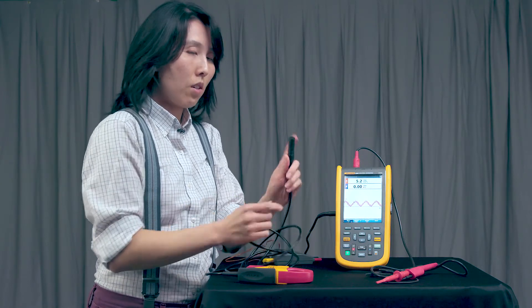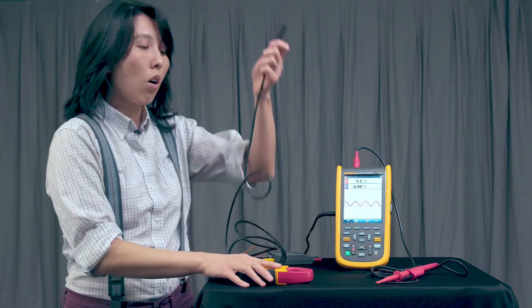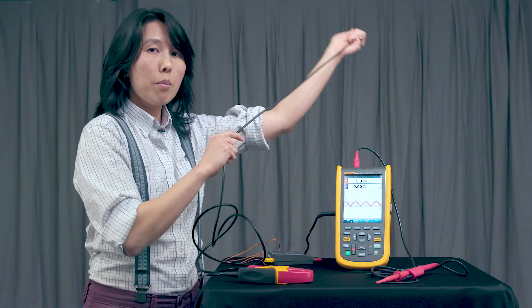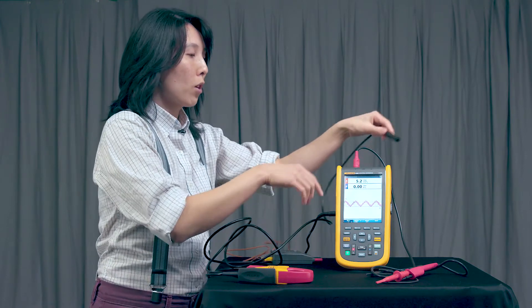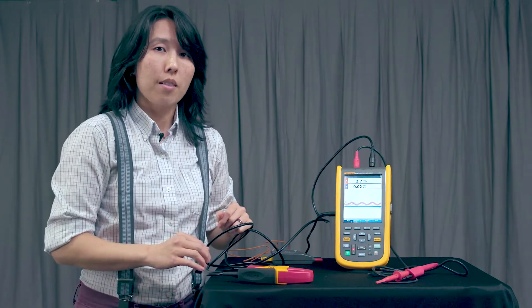Now the 120 series adapter, the current clamp, and the voltage probes are all included in the kit. The temperature thermocouple modules are sold separately. So the current is going to go right into channel B like that.